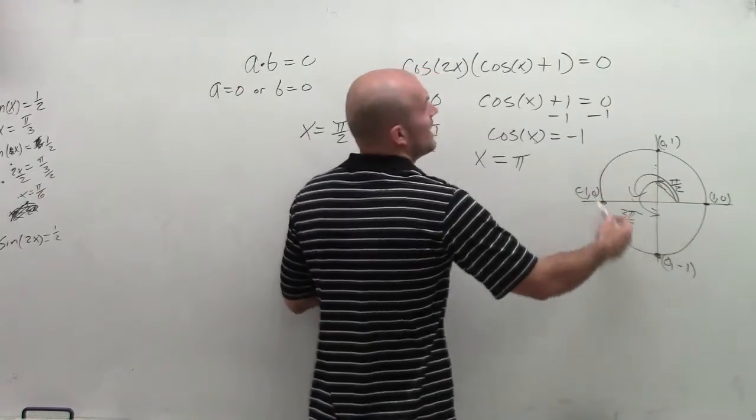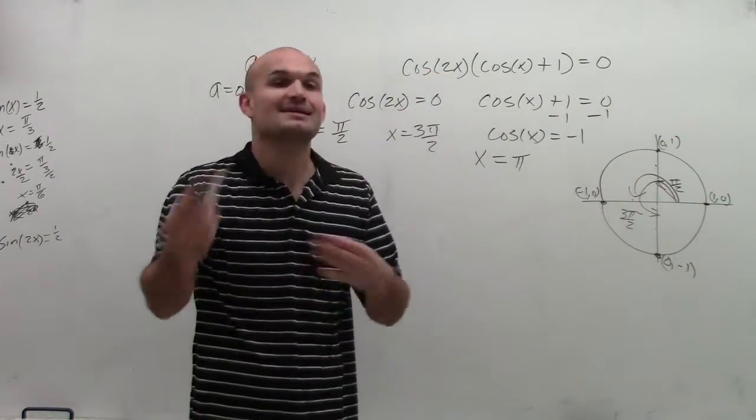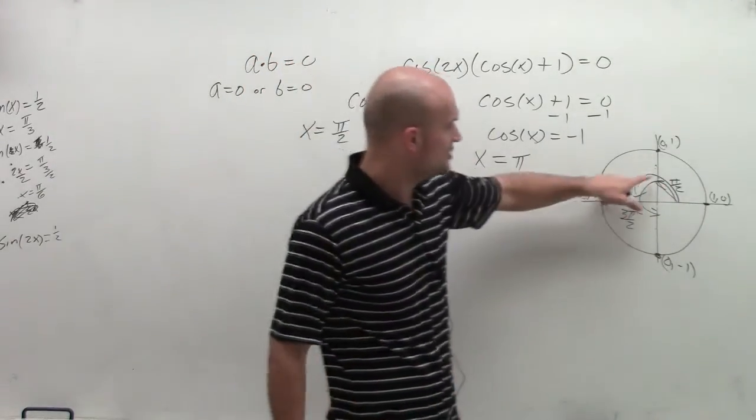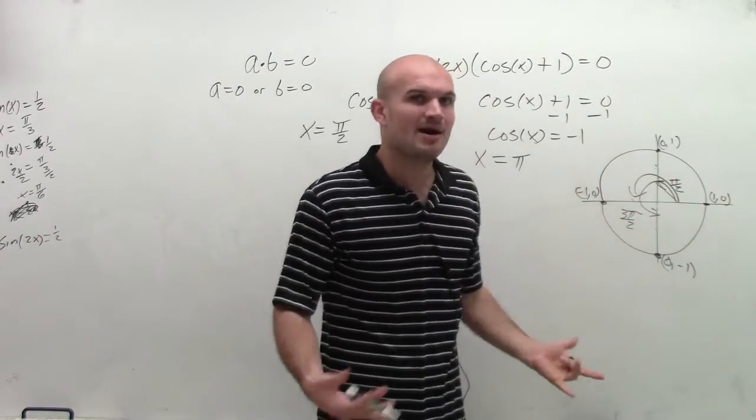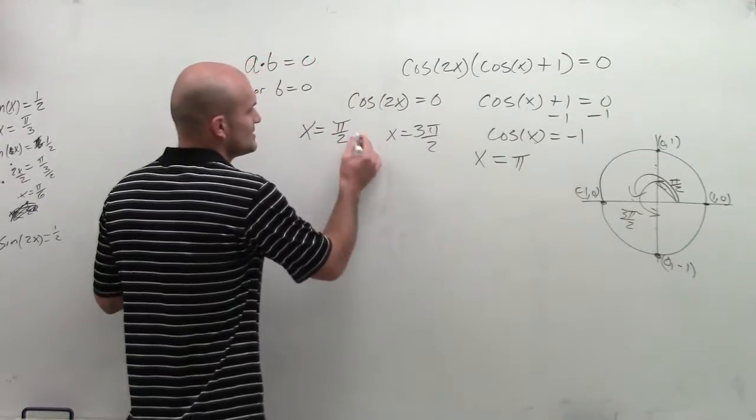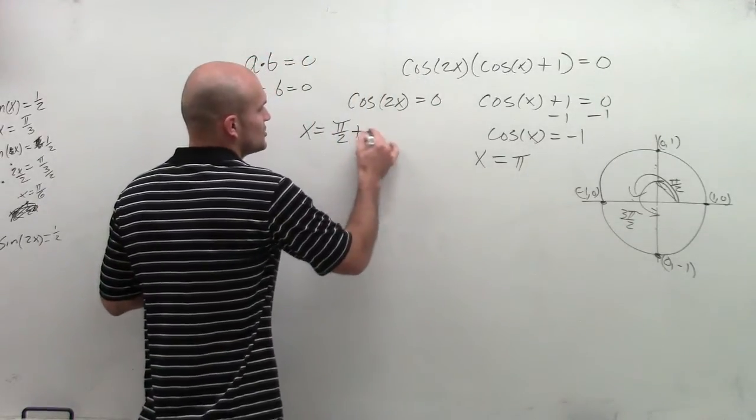And then I can add it again, and I get 7 pi halves, and I can continually keep on doing this. Now you notice, I can keep on adding 2 pi for this problem, and I can keep on adding 2 pi to this angle. But why keep on doing that when all I simply need to do is for one angle, just add pi, right?